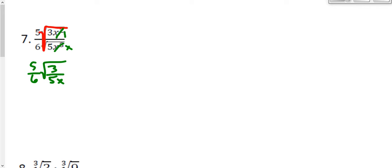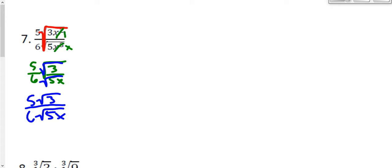Because there's nothing else I can do to simplify that radical as a whole, I'm going to separate it back out into separate radicals: the square root of 3 in the numerator and the square root of 5x in the denominator. So we have 5 and the square root of 3 on top, and 6 and the square root of 5x on bottom. Now that I've simplified the fraction as much as I can, I can look at the top and bottom separately. But I can't simplify the square root of 3, the square root of 5x, or the 5 and 6 any further.